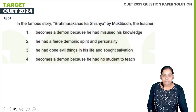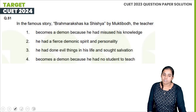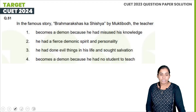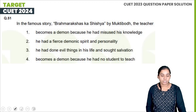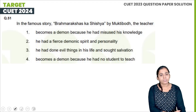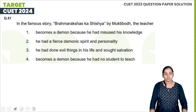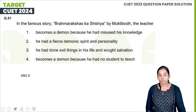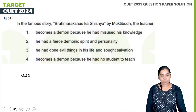Next question: In the famous story 'Brahma Rakshasa Shiksha' by Omikthibot, the teacher becomes a demon because he misused his knowledge, had a fierce domineering spirit, and did everything in his life seeking salvation — but ultimately becomes a demon because he had no student to teach. The answer is D.